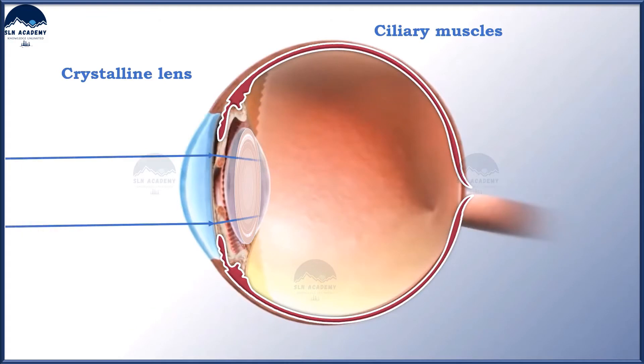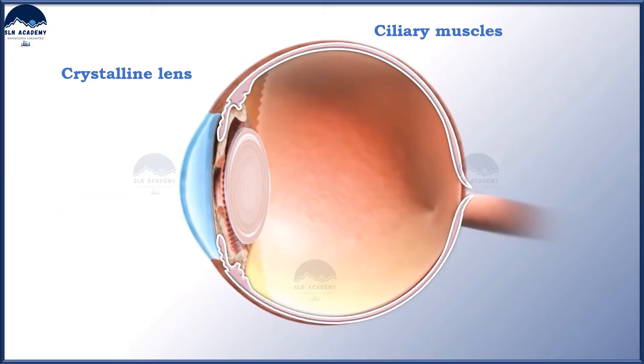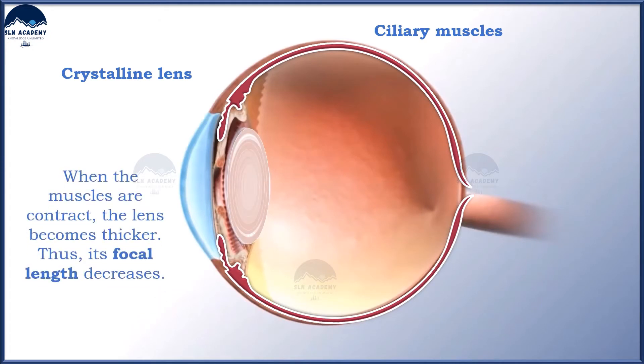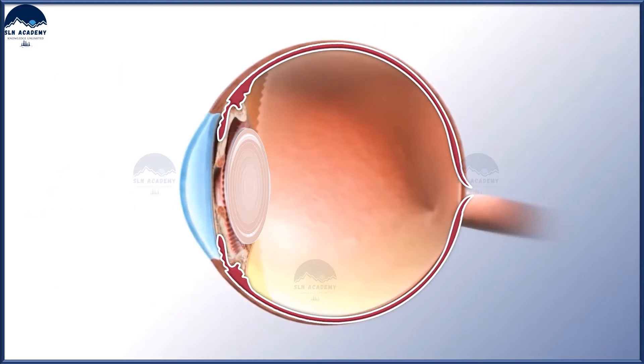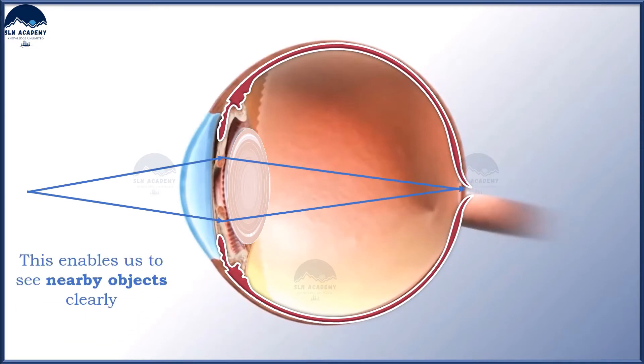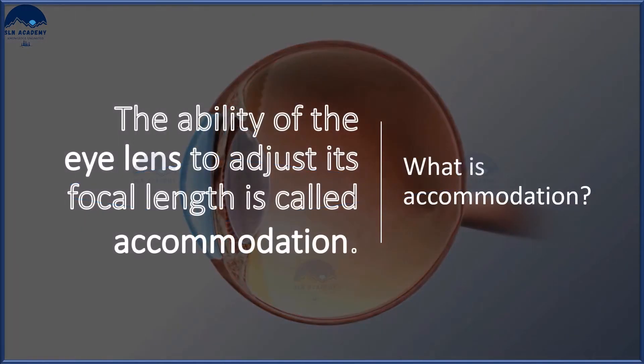When you are looking at objects closer to the eye, the ciliary muscles contract. This increases the curvature of the eye lens. The eye lens then becomes thicker. Consequently, the focal length of the eye lens decreases. This enables us to see nearby things clearly.